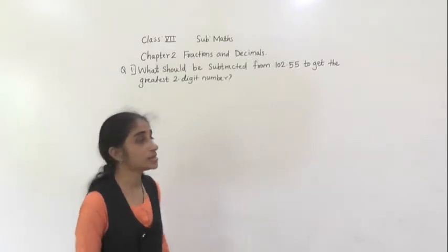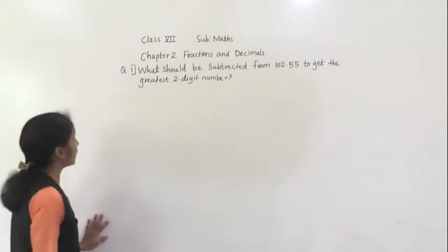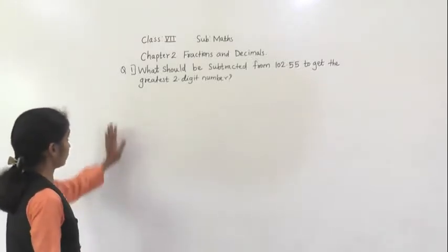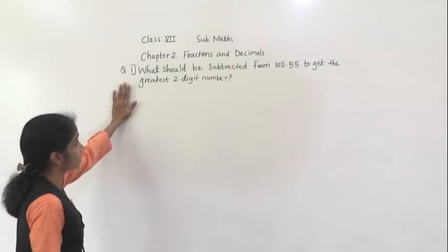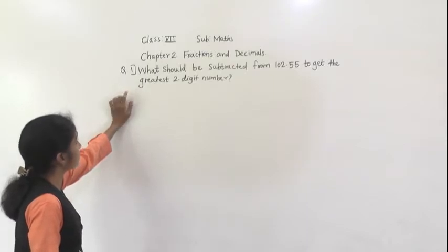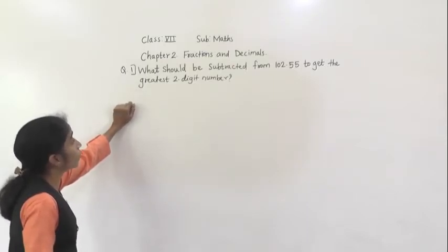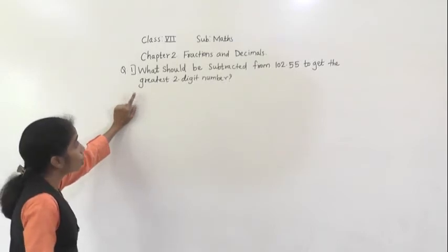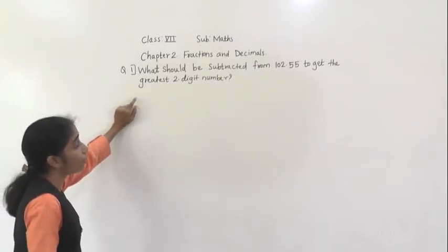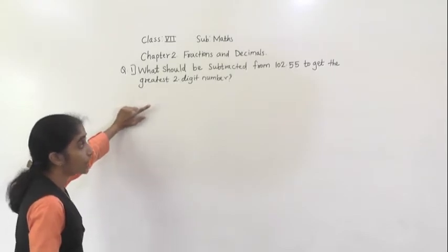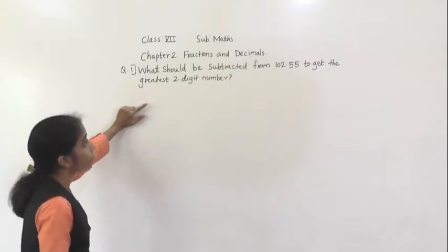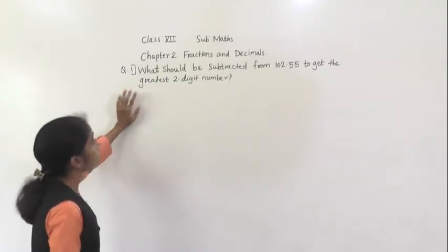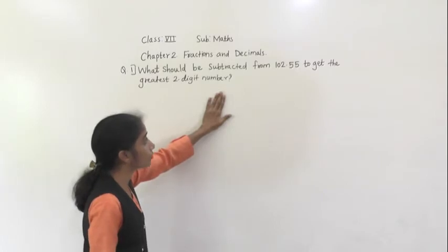Good morning students. Let's start revision of fractions and decimals. Question number 1: What should be subtracted from 102.55 to get the greatest two-digit number?